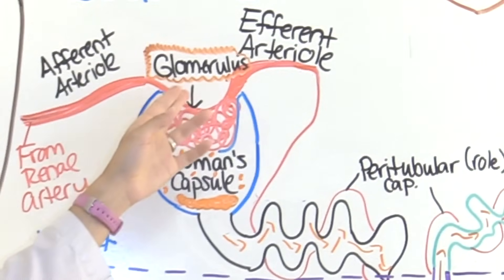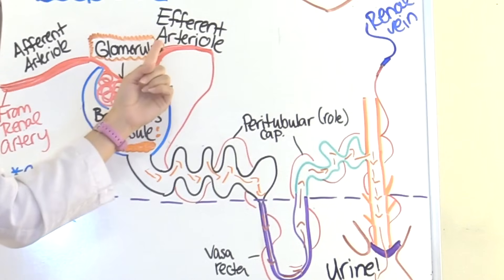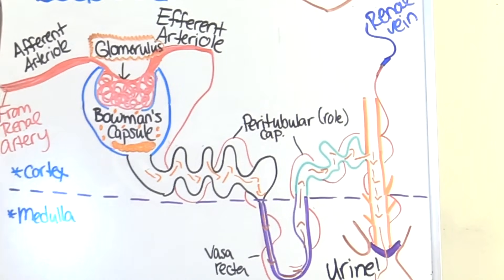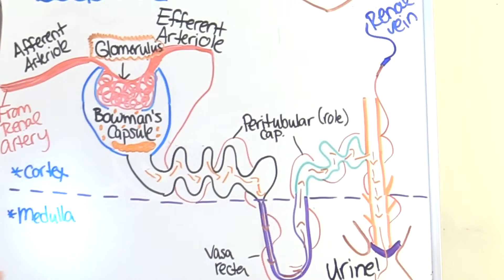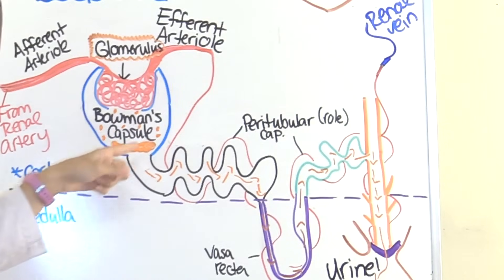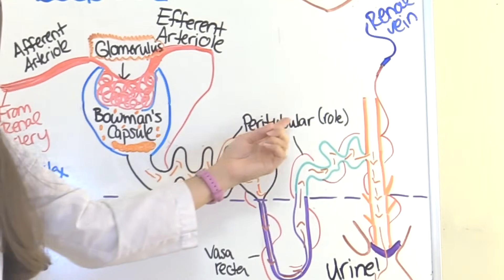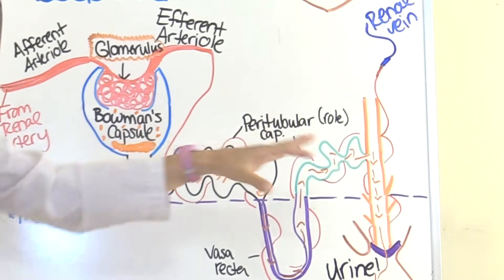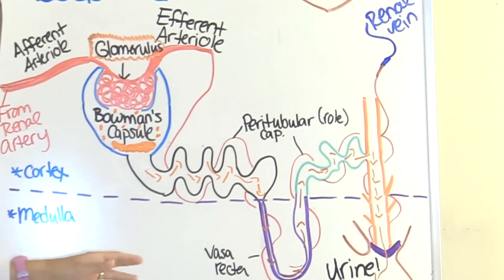Then after the blood has filtered through the glomerulus, it branches off into what's called the efferent arteriole. Efferent means away, so it's leaving the glomerulus. The efferent arteriole still has a very important job — it goes down and starts twisting around those tubules, because it still has work to do. What it forms is called peritubular capillaries, which wrap around the upper ducts. When they go down around the loop of Henle, they're called the vasa recta, which is a type of peritubular capillary.